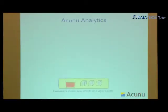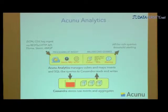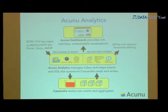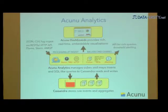Acunu Analytics uses Cassandra under the hood to store raw events and aggregates. We have integration with Flume and Storm, and we also have a bunch of rich dashboards, because the next thing customers asked was: it's all very well being able to get these results, but how do I see them, how do I visualize them?